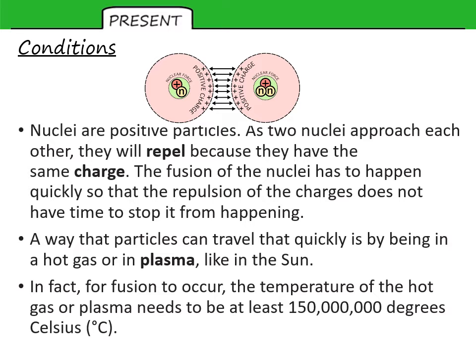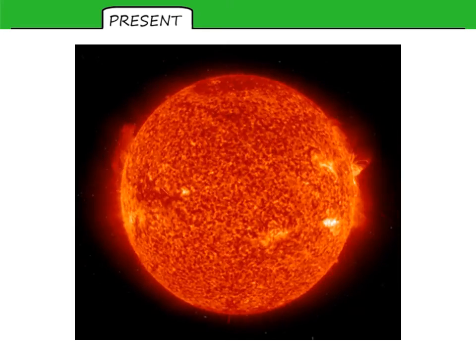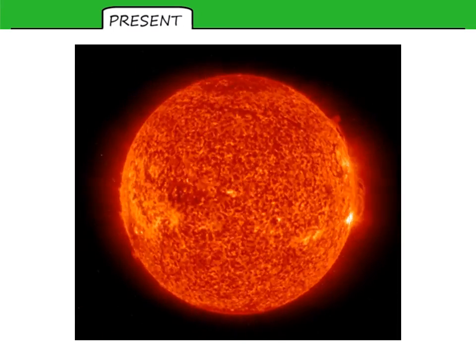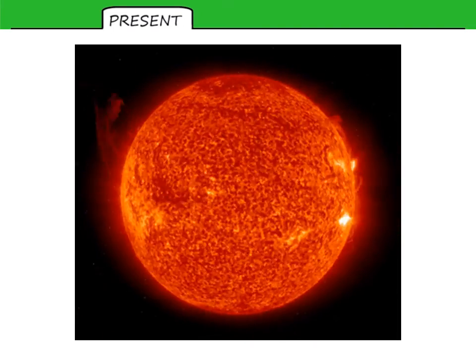And to do that naturally, we need something like the sun. So being in a hot gas or plasma and extremely high temperature. So you can see there in the sun at least 150 million degrees. So that's not something you can achieve very easily.